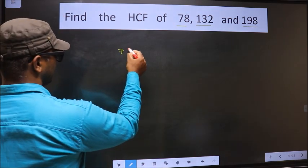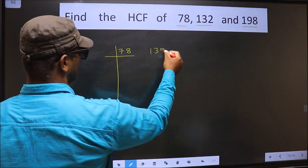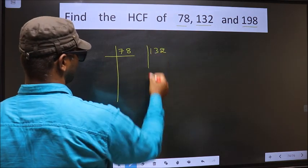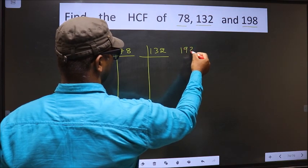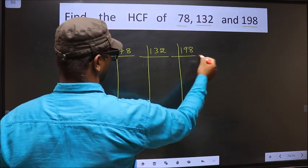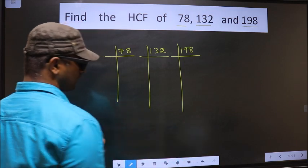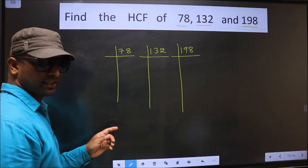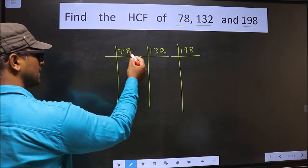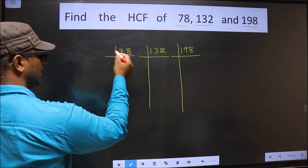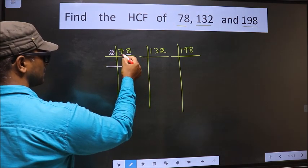We factorize 78, 132, and 198. For 78, the last digit is 8, which is even, so we take 2. The first number is 7.